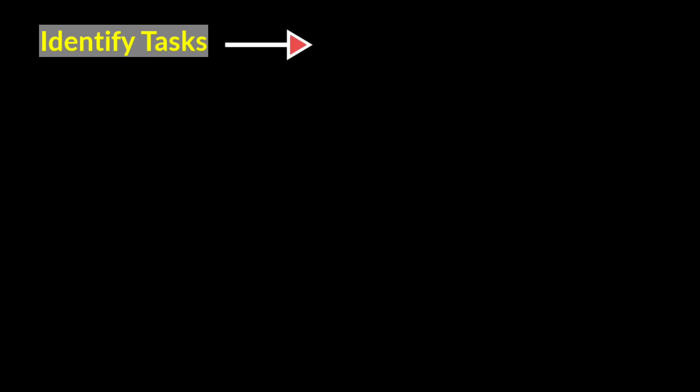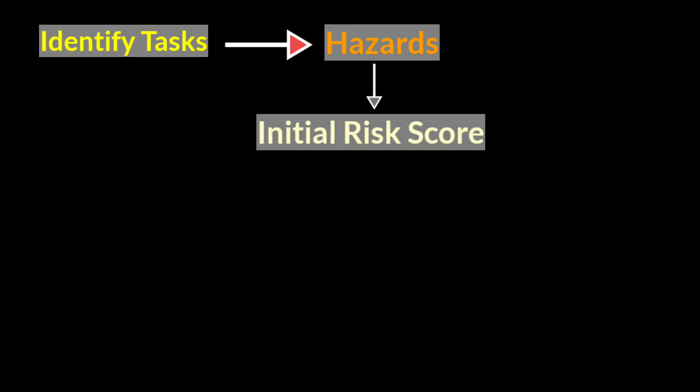After identifying the task, we have to identify what are all the hazards associated with that task. After identifying the hazard, using the guidelines given by DGMS, we have to find what is the initial risk score of that hazard.